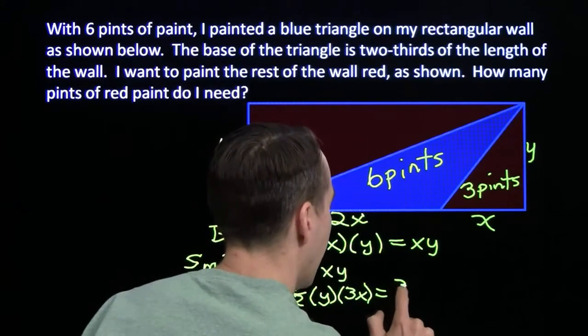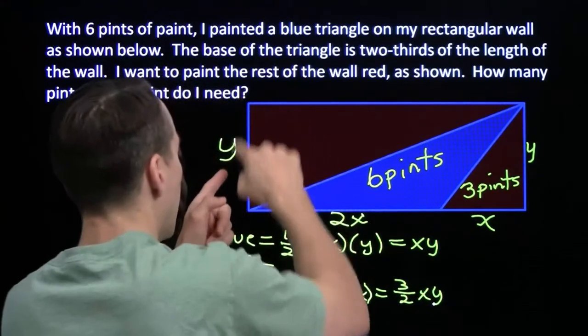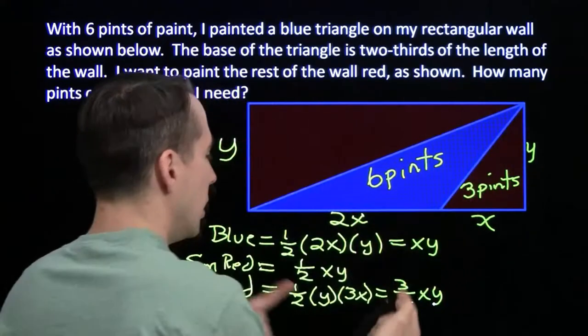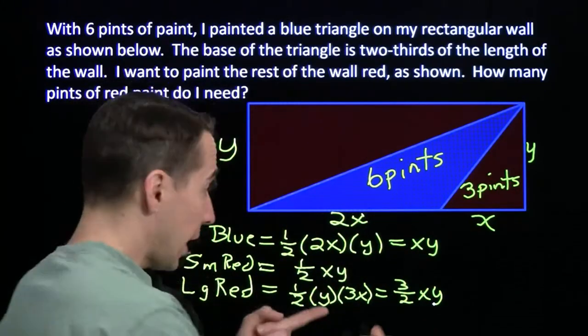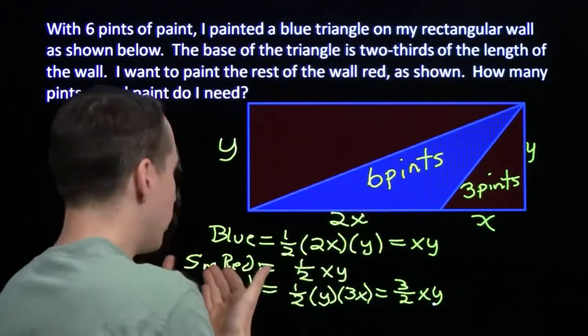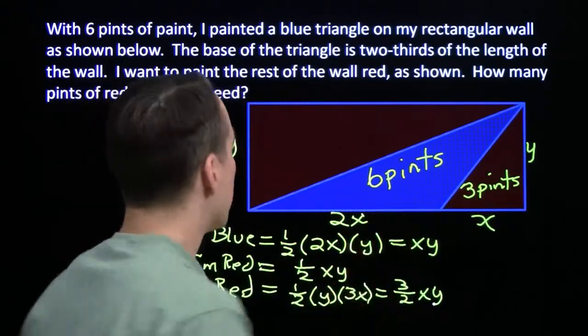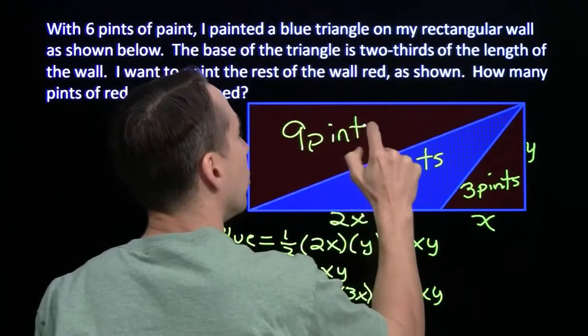So the area here is one-half y times 3x. And that's equal to 3-halves xy. So the amount of paint I need for this triangle is just 3-halves the amount I needed for the blue triangle. Or I could look at it as the large red triangle is 3 times the size of the small red triangle. I need 3 pints for the small triangle, so I need 9 pints for the large one.